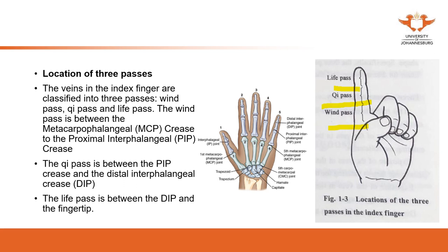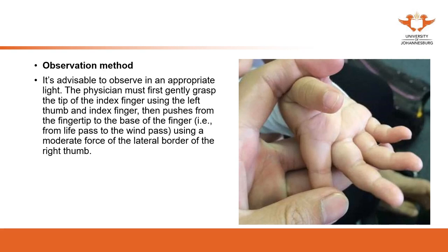We are going to revise the anatomy: DIP, PIP, and MCP. For these three parts we give three names. From MCP to PIP is the wind gate; from PIP to DIP is the qi gate; and above DIP toward the fingertip is the life gate. The different gates indicate how severe the patient's condition is. If the vein can be seen clearly all the way to the tip of the finger, this indicates a severe condition in the baby.